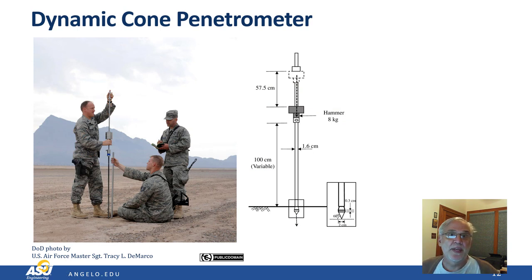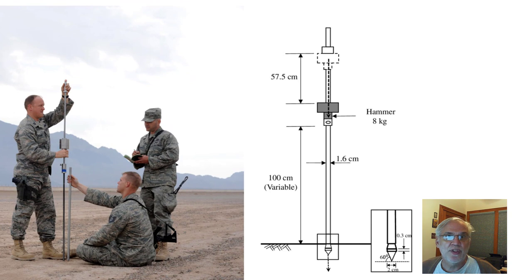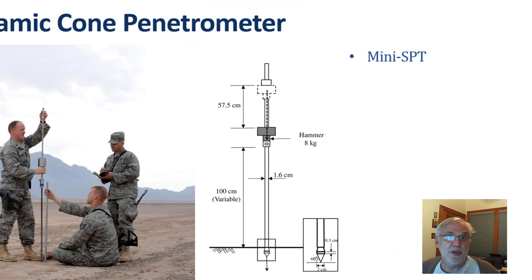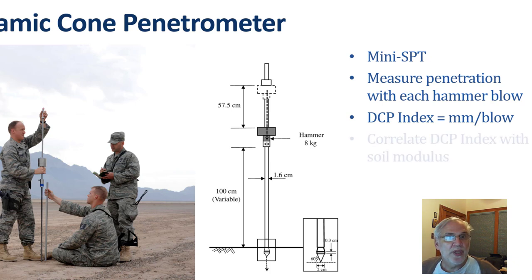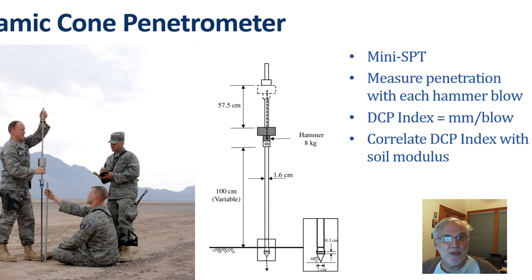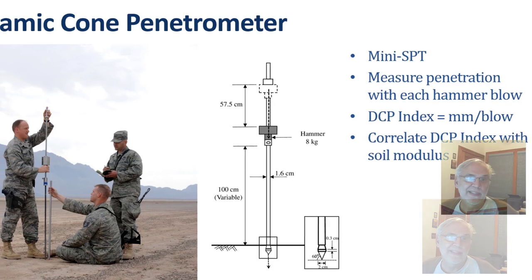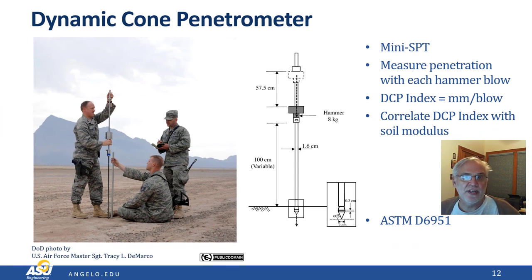The dynamic cone penetrometer, or DCP, is a device first developed in South Africa to determine the quality of pavement subgrade soils. It consists of a rod with a steel cone at the end. The cone is driven into the ground with a slide hammer, and the number of blows required to drive the cone a certain distance is recorded. The test looks a lot like a mini standard penetration test except that it drives a small solid cone rather than a standard split spoon. With every drop of the hammer, the penetration distance is measured. The DCP index is the number of millimeters per blow, and it can be correlated with both soil modulus and soil strength. The ASTM standard for this test is D6951.